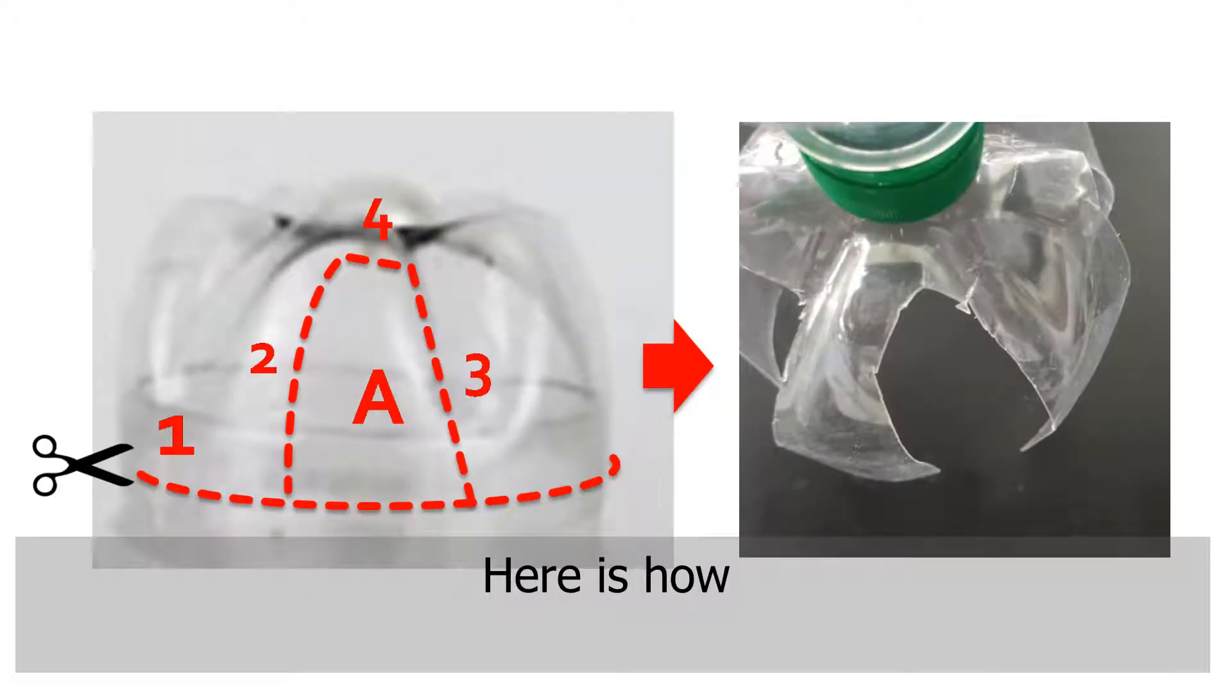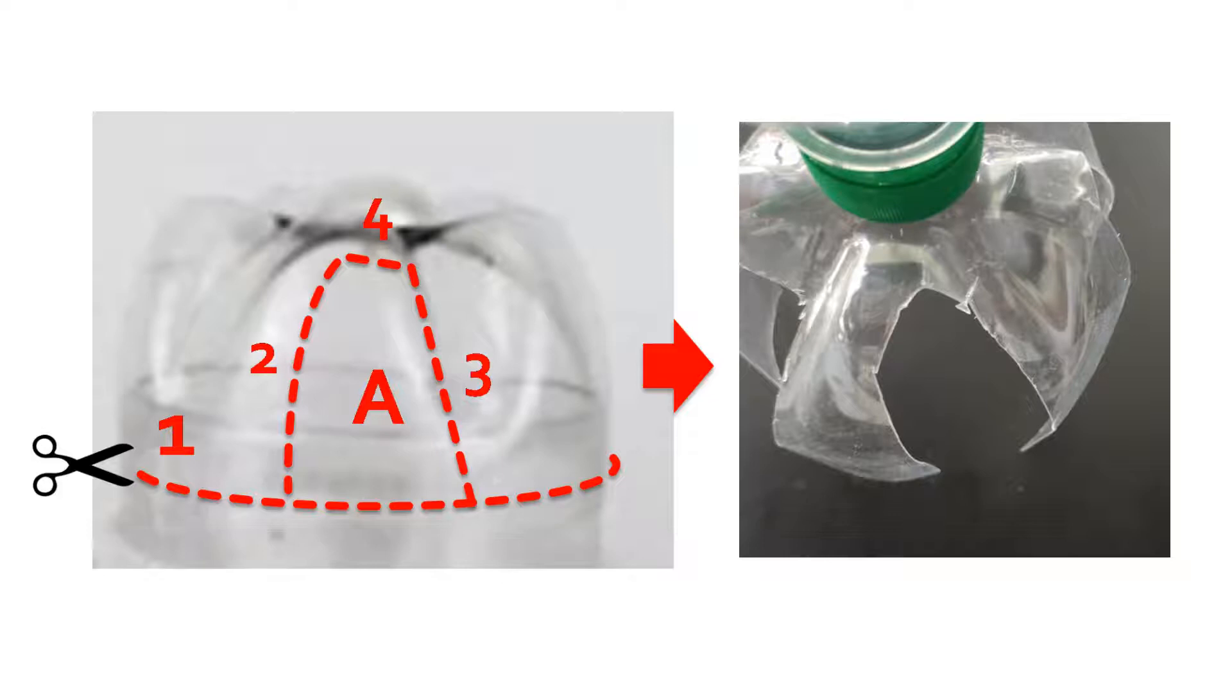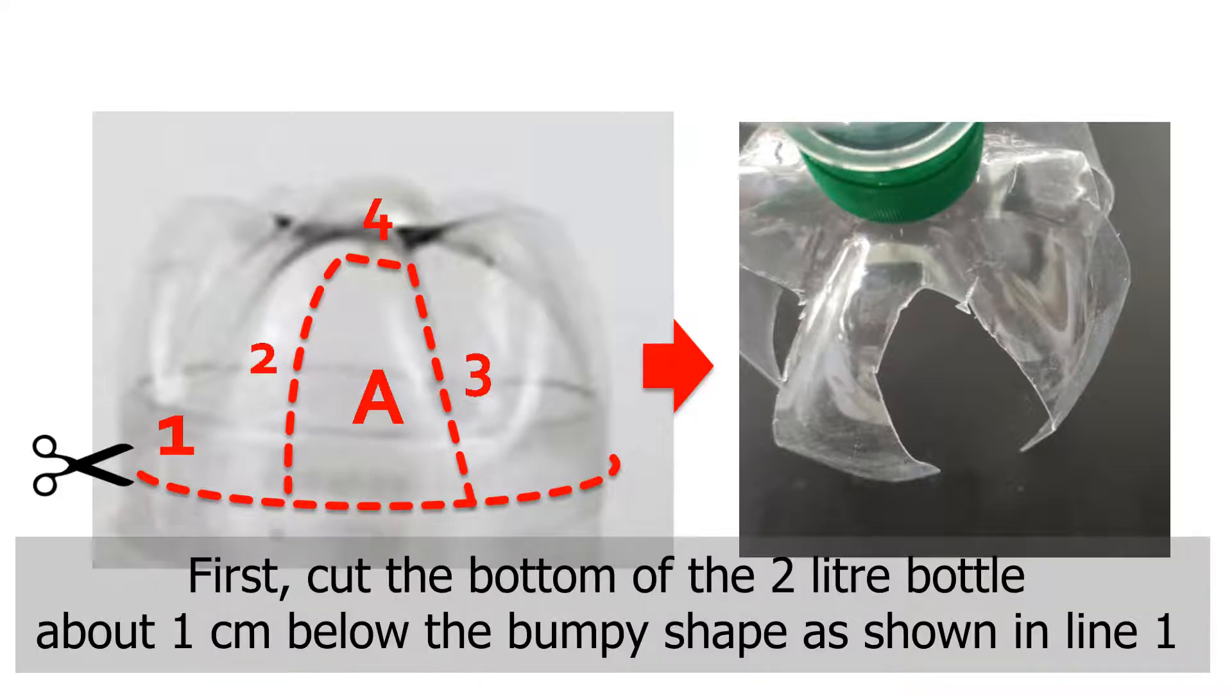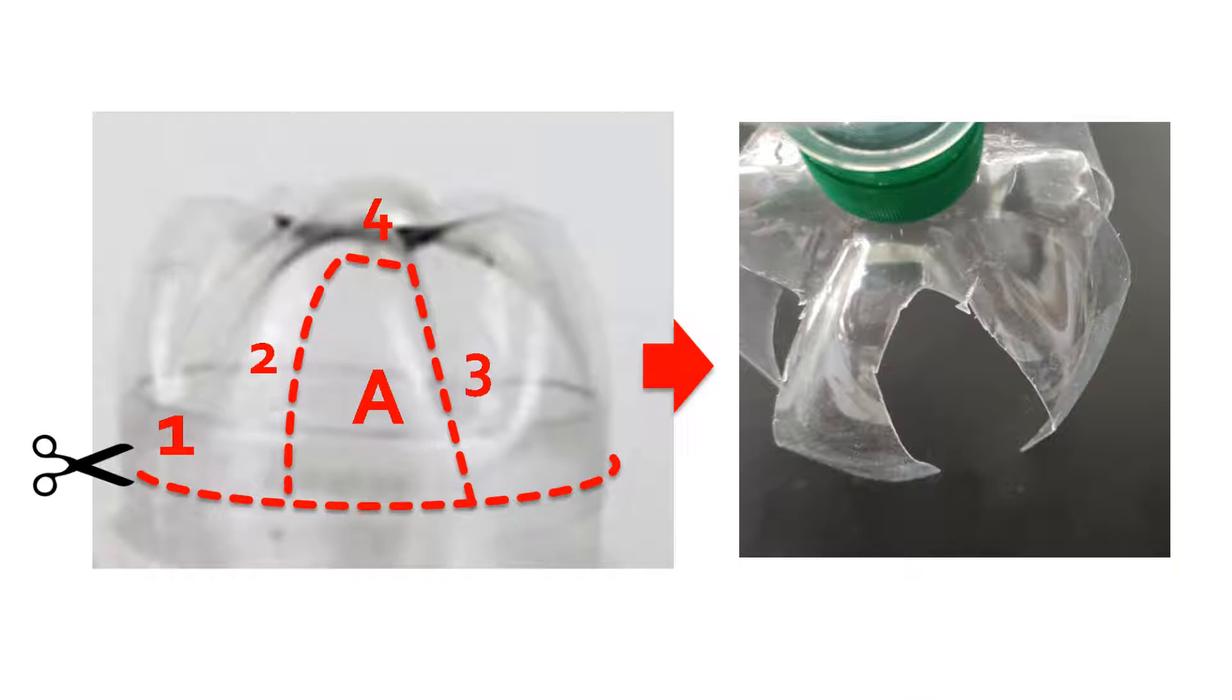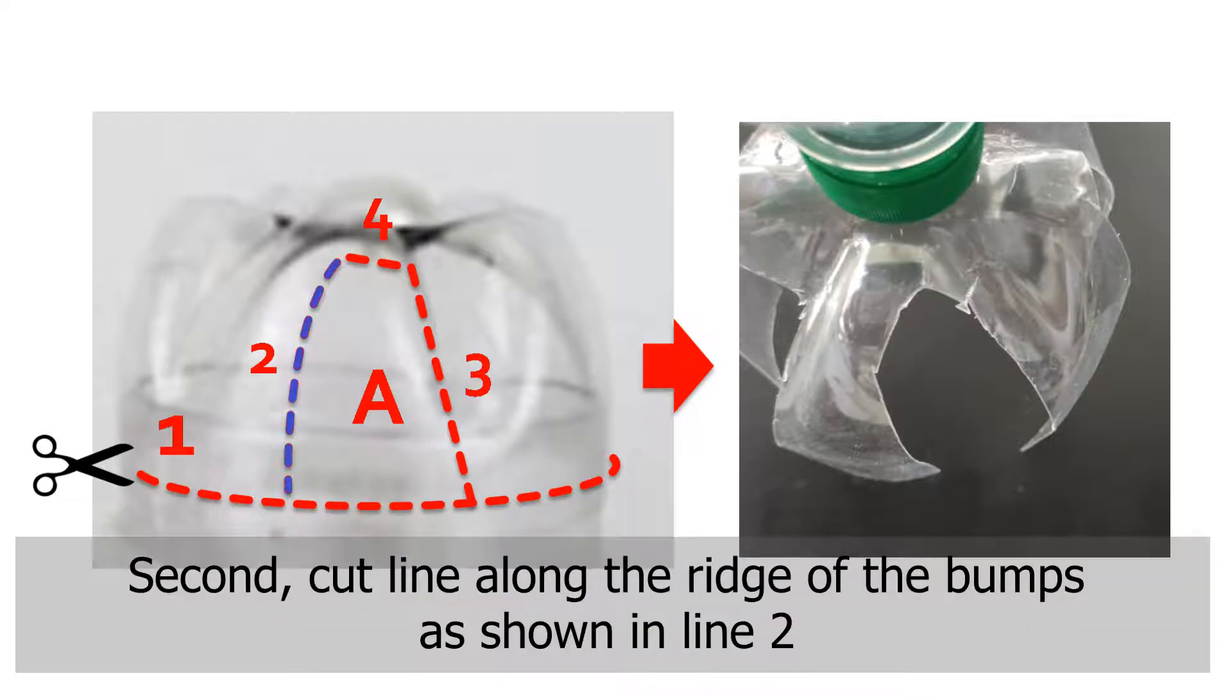Here is how. First, cut the bottom of the two-liter bottle about one centimeter below the bumpy shape, as shown in line one. Second, cut along the ridge of the bumps, as shown in line two.